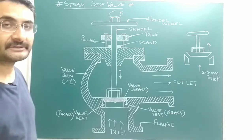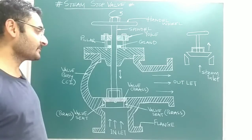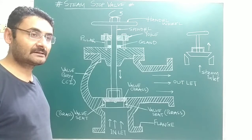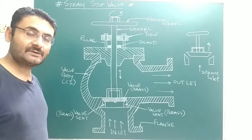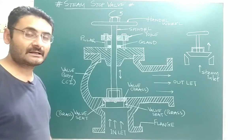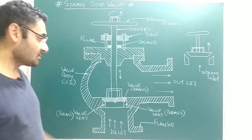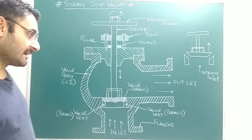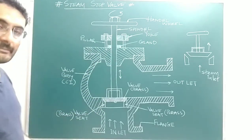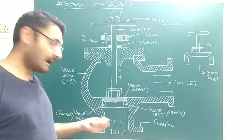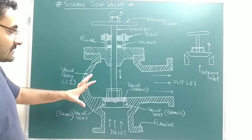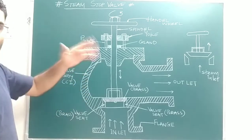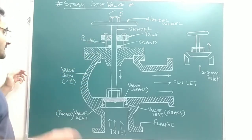Without wasting any time, let us start. I hope you are ready with your pen and paper so you can note down the important points. Supposing a question is asked in your examination — 'Explain the working principle of the steam stop valve' — then first of all you will draw this type of figure, and then write that the steam stop valve is located at the top side of the boiler.